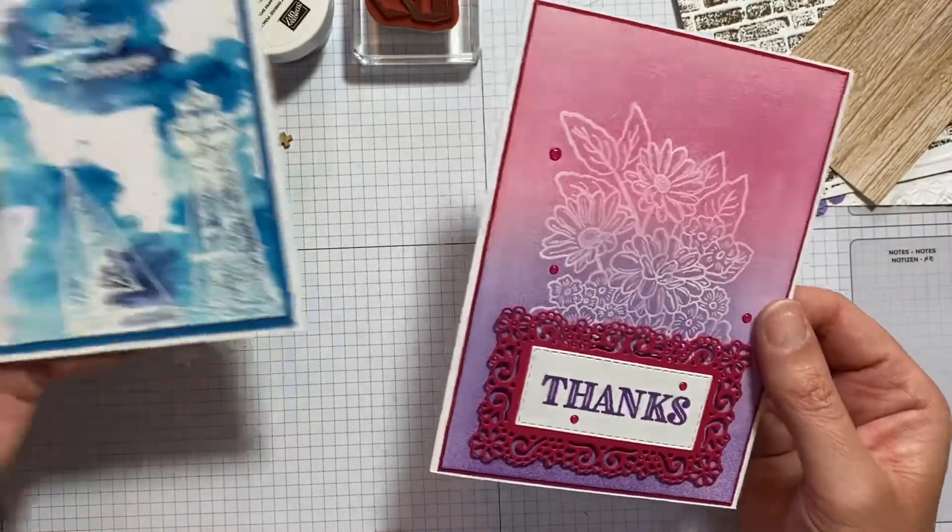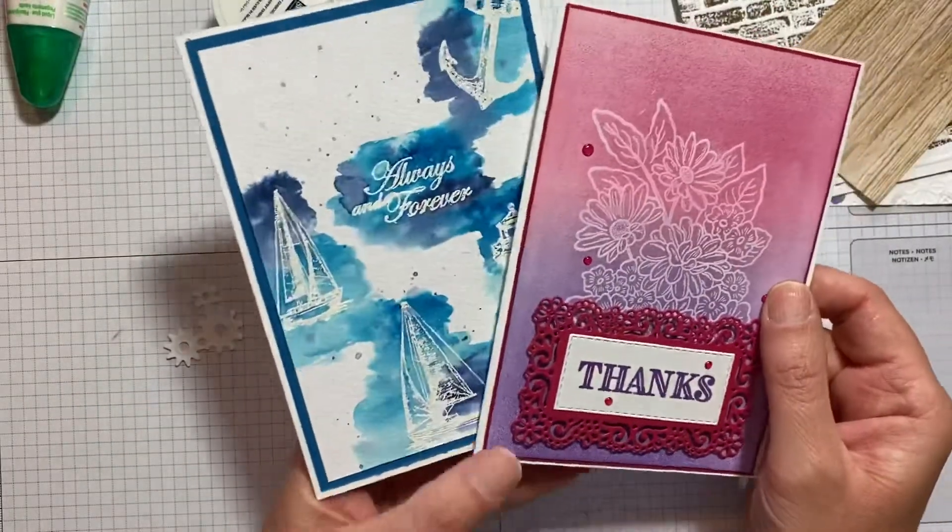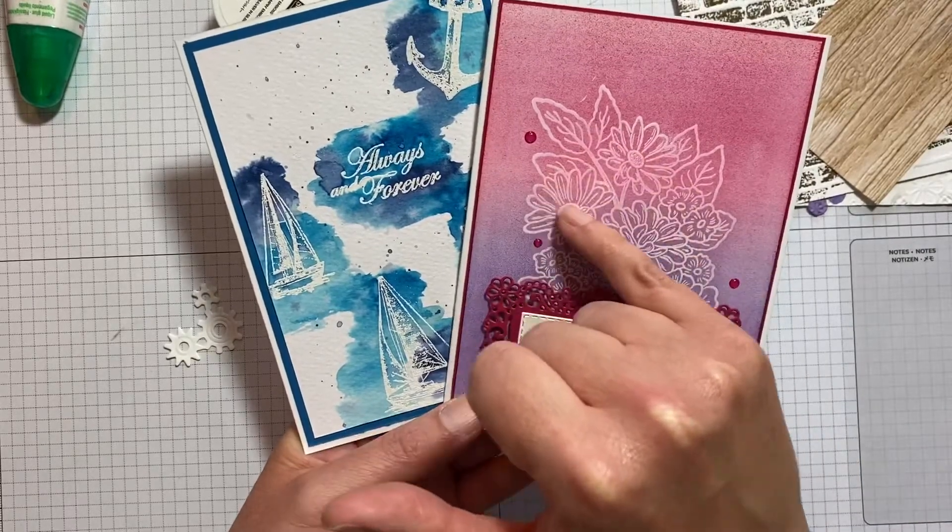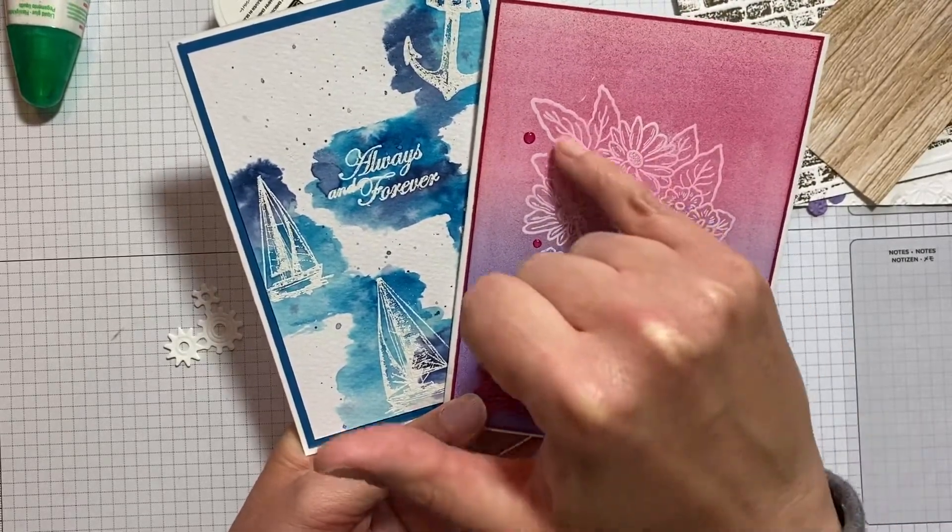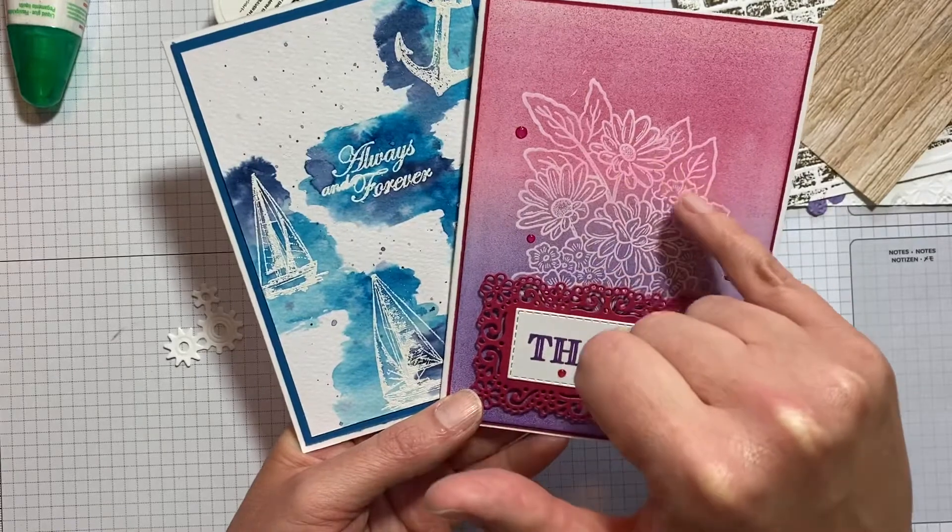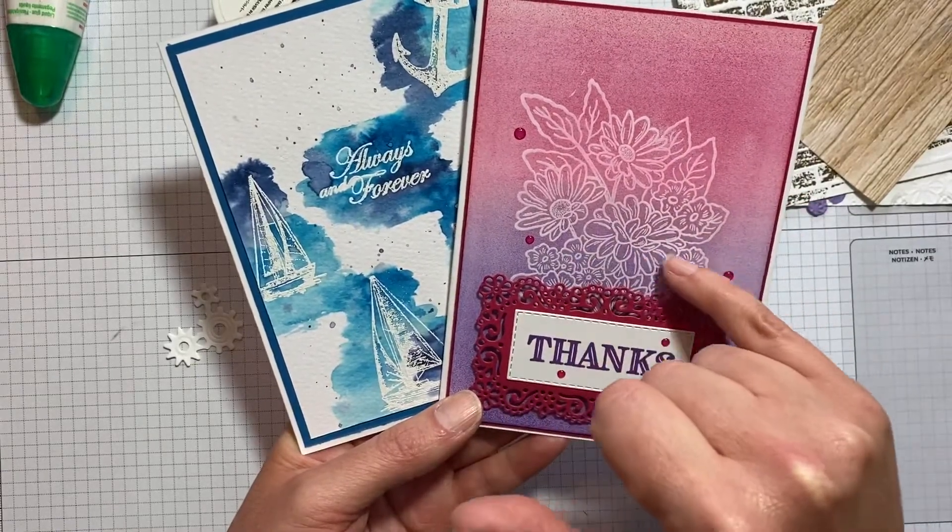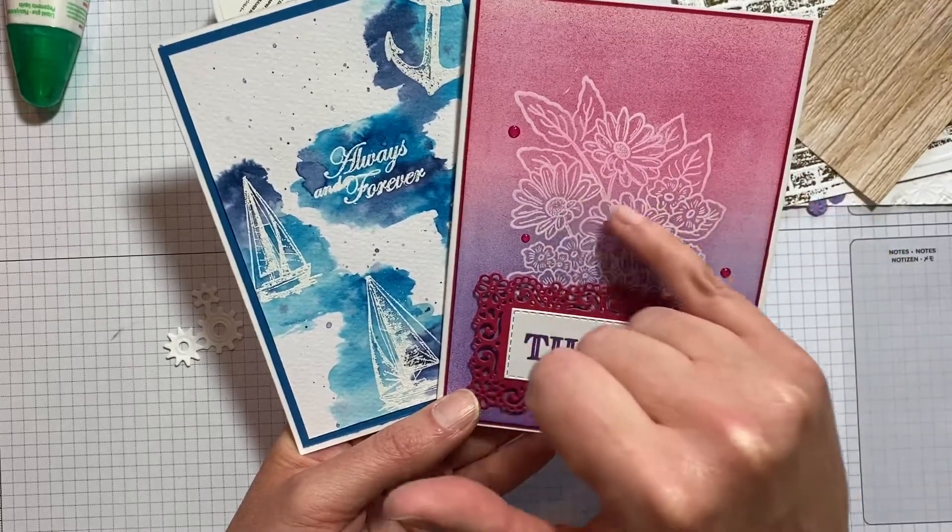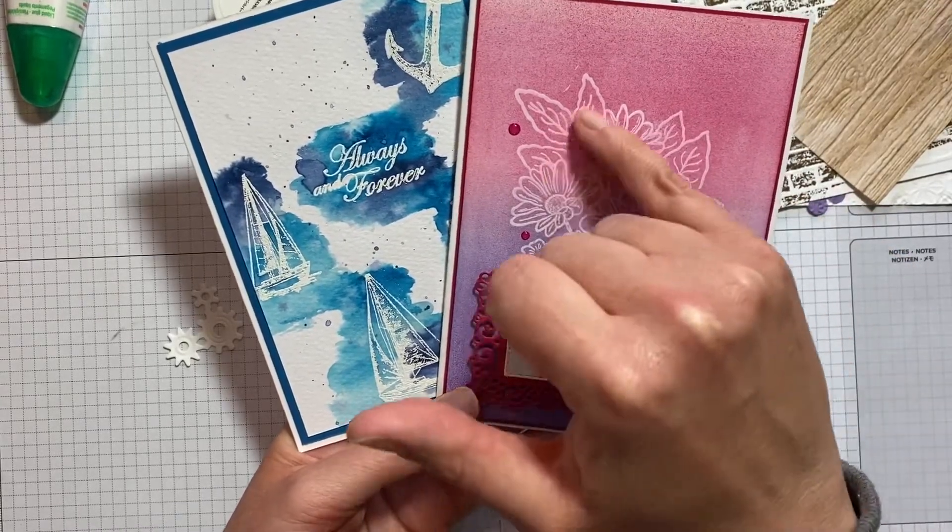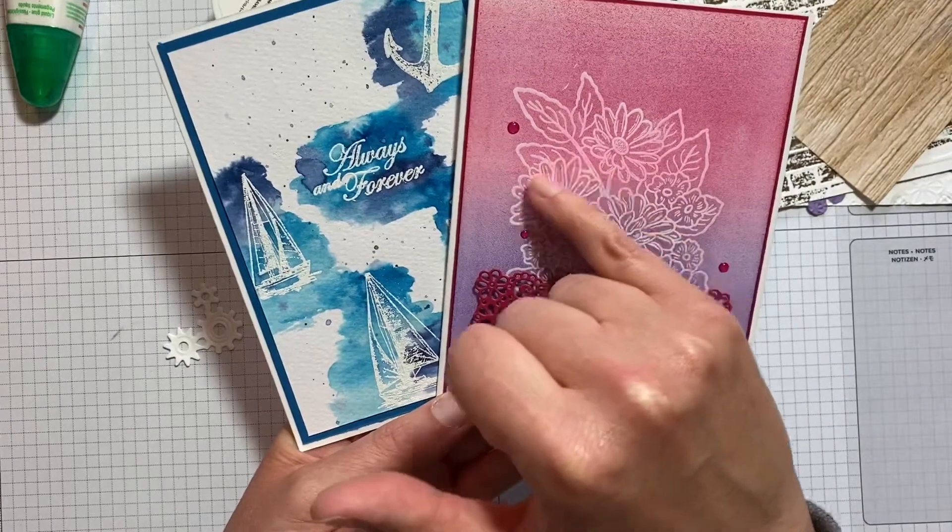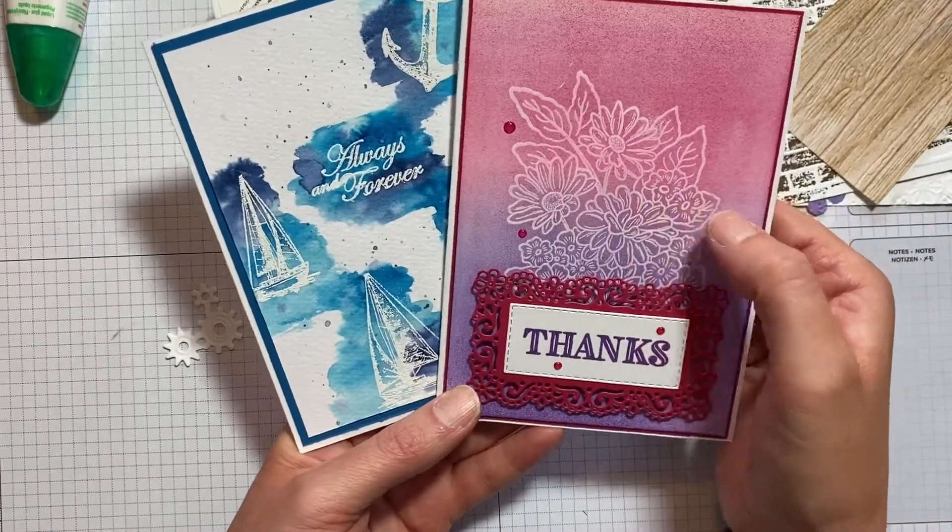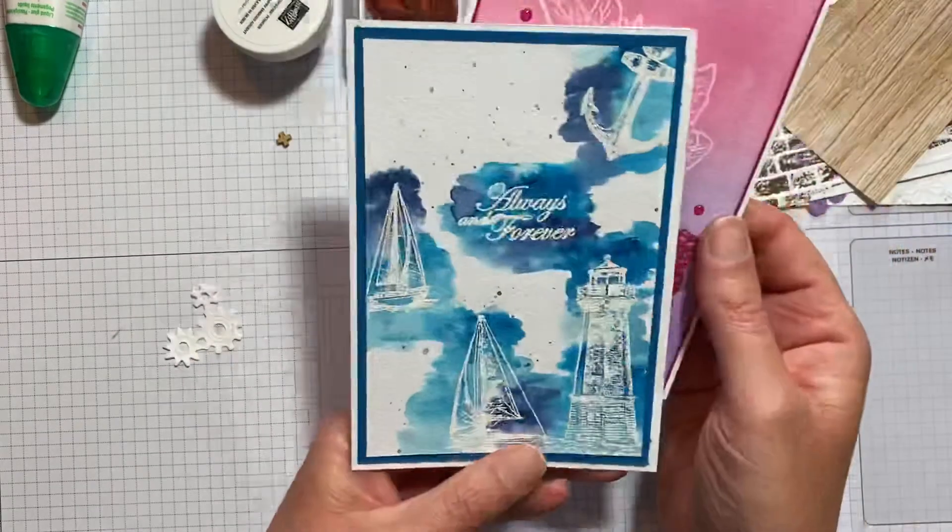Another option is to use it as a kind of a resist. Here I've got a white piece of cardstock I've heat embossed in white and I've then sponged over the top with a sponge brayer, and you get the resist from the heat embossed areas.